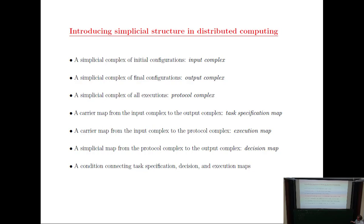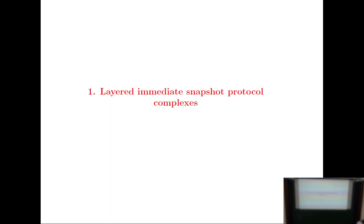I wanted to mention three different models of computation. The first one I'll discuss in more detail, as it's the most used. They all have long names because you start with the model and then impose conditions. The more conditions you impose, the less natural the model becomes from the distributed computing point of view — but the easier it is topologically. The simplest one is what's called layered immediate snapshot protocol complexes.